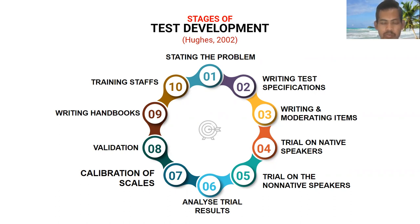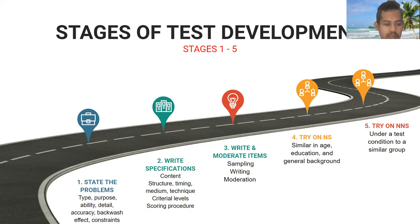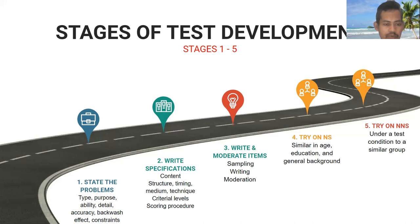Now we'll look at each stage more carefully. The first stage is studying the problem. When we first try to develop a new test, we need to define what type of test we are going to have, what the purposes of the test are, what abilities we are going to test, how much detail is needed, and also the accuracy of the test. In addition, we need to define the benefit of the backwash effect and the constraints of the test, such as the absence of technology or staff.